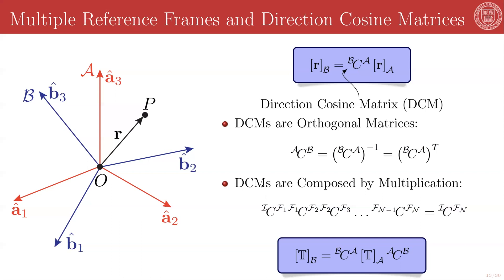We can compose direction cosine matrices representing multiple successive rotations just by matrix multiplication. In our notation, if we have a DCM mapping from I to F1, then from F1 to F2, F2 to F3, and so on up through frame FN, all of these interior indices collapse down — just like in the case of vector addition — and this total product maps I to FN. So if we right-multiply by the representation of a position vector R in the components of frame FN, what comes out on the left-hand side is the representation of that vector R in the components of the I frame.